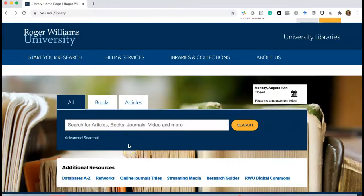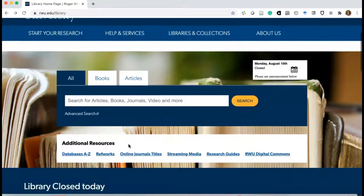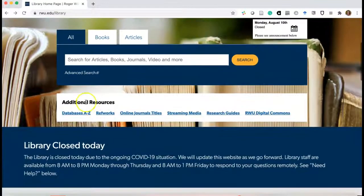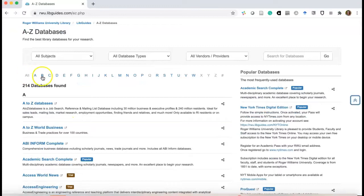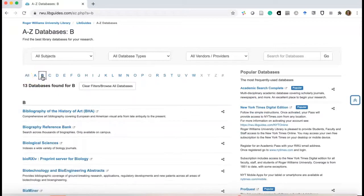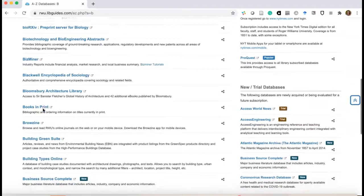To access Browzine, you'll want to start at the library's homepage rwu.edu/library. Then you'll want to look under the search box for the database A-Z list. If we click on that, we'll next navigate to B for Browzine and scroll down until we see it.